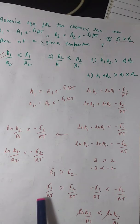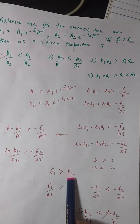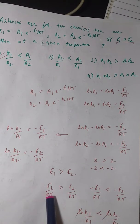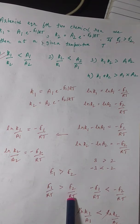Now it's been given to us that E1 is greater than E2. So let us say we divide both the sides by RT. Then we can write it as E1/RT is greater than E2/RT.